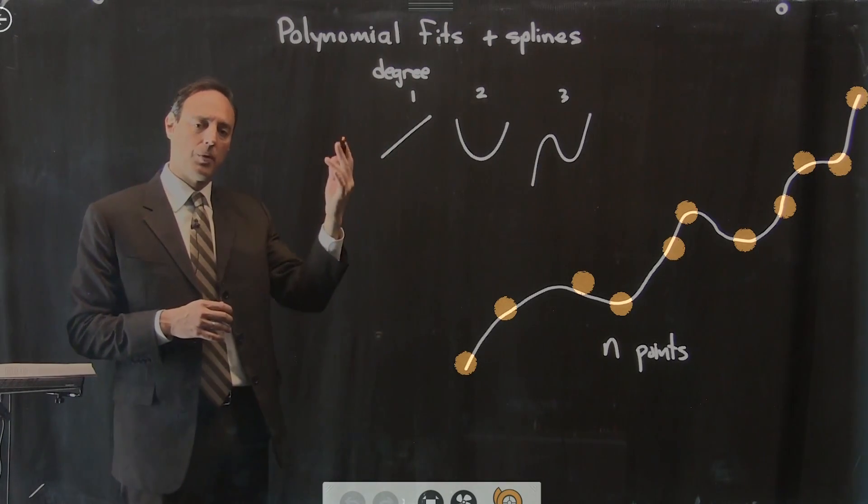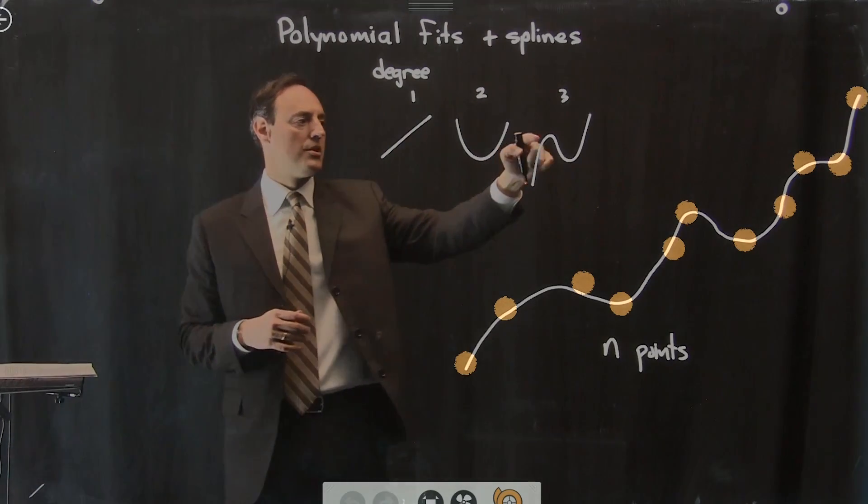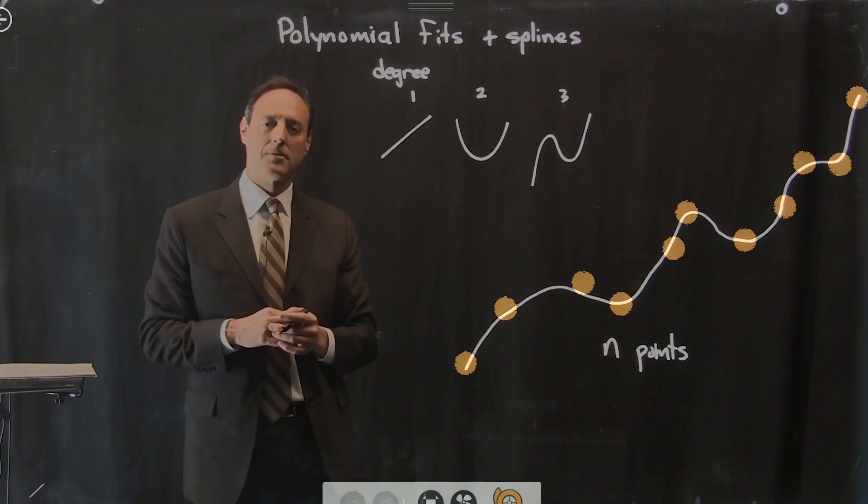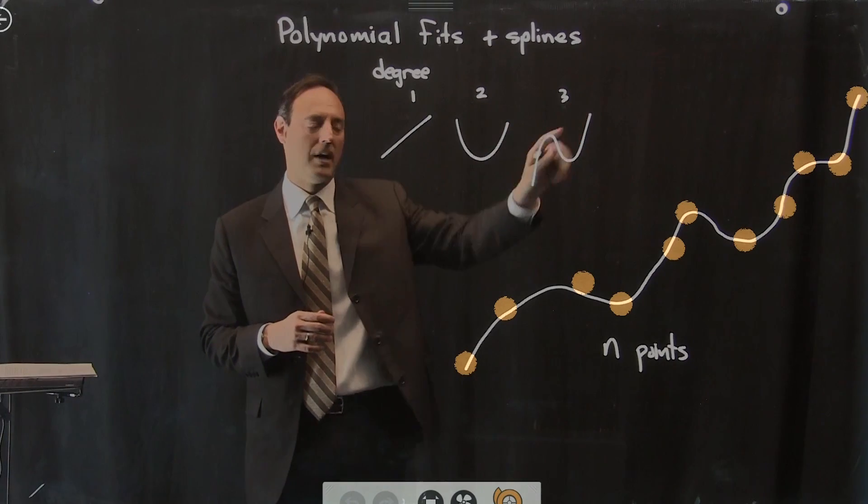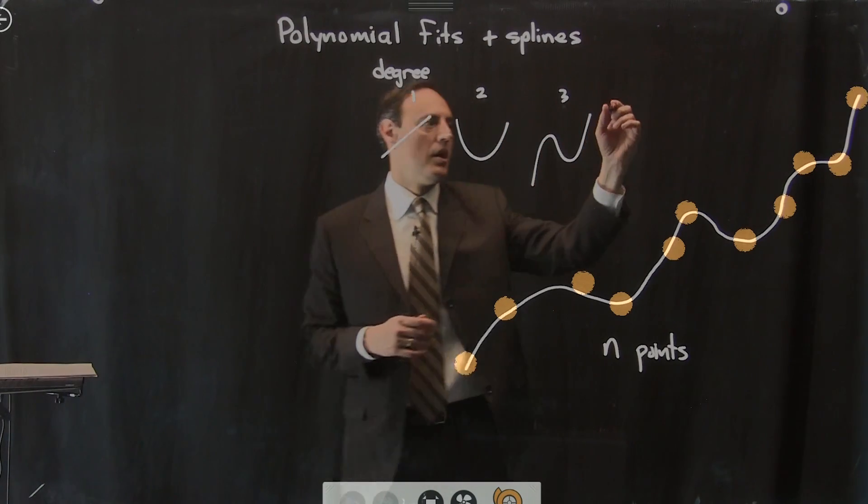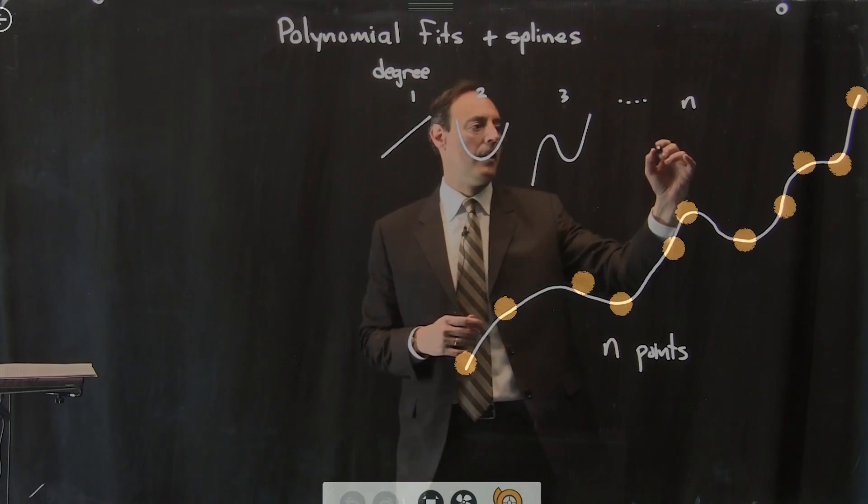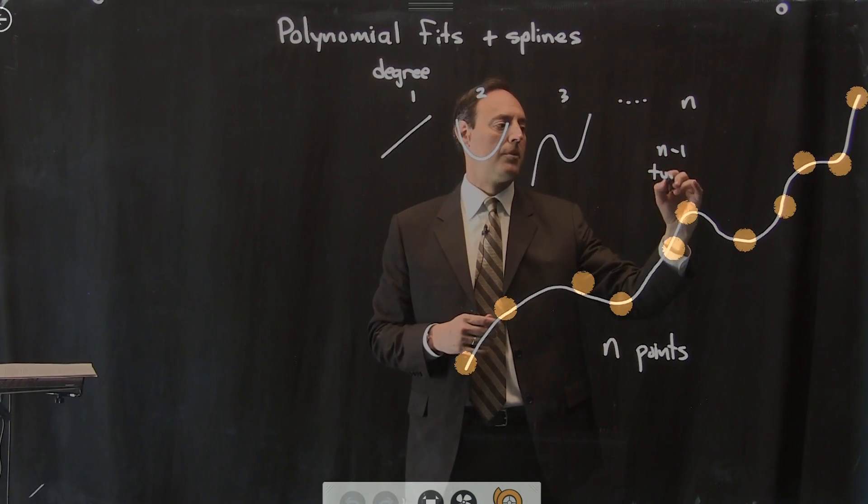And in fact, whatever the degree of the polynomial is, you notice that there's, this is n, there's n-1 turning points. Okay? So this polynomial has to turn here and here. So as I get all the way up to here, there are n-1 turning points.